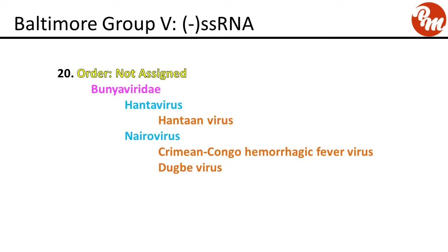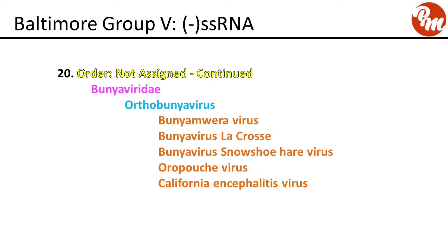Next, family Bunyaviridae, order not assigned. Genus hantavirus includes Hantaan virus. Genus nairovirus includes Crimean-Congo hemorrhagic fever virus and Dugbe virus. Genus orthobunyavirus includes Bunyamwera virus, Bunyavirus La Crosse, snowshoe hare virus, Oropouche virus, and California encephalitis virus.